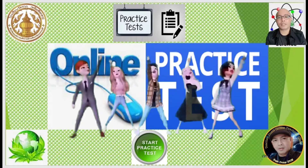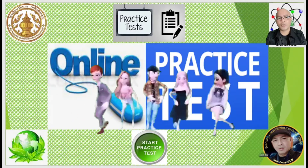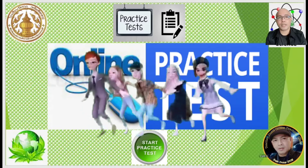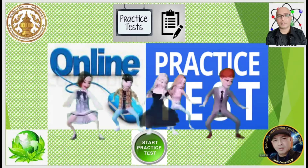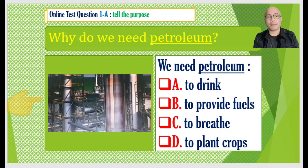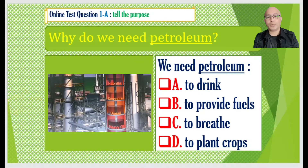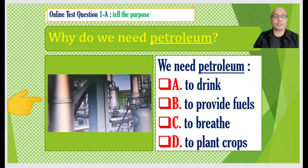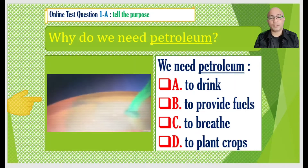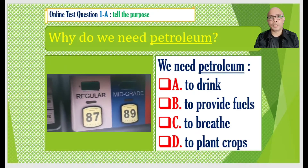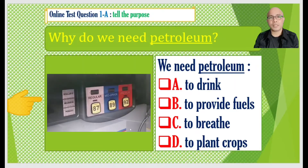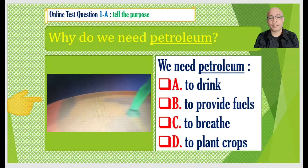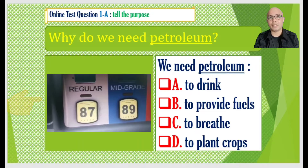For our online test, just write letters A, B, C, and D for your answer. Practice test number one: Why do we need petroleum? We need petroleum — A to drink, B to provide fuels, C to breathe, D to plant crops.